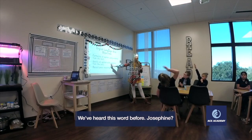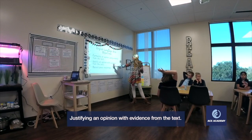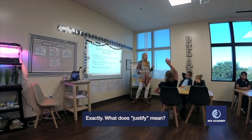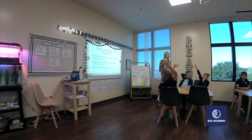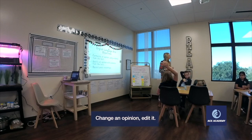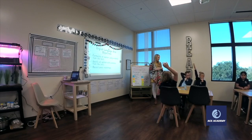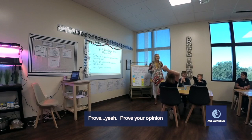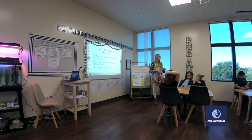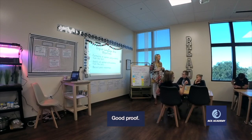Who could read me objective number two? You've heard this word before. Josephine? 'Justify an opinion with evidence from the text.' Exactly. What does justify mean? Rose? 'It's like figure out.' You're close. Justify an opinion... 'Change it or edit it.' Not change or edit. 'Prove.' Yeah, prove your opinion using evidence. It's like providing a reason why. Good proof.